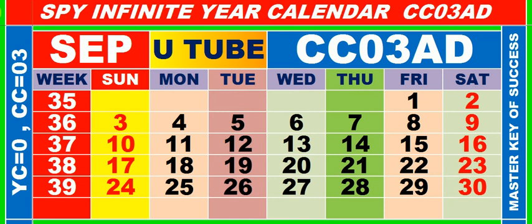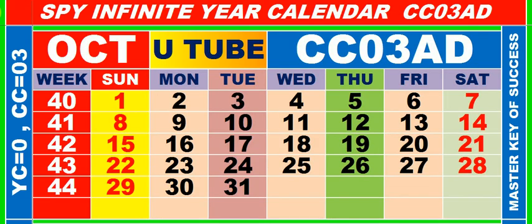Calendar for the month of September, having calendar code equal to 03. Calendar for the month of October, having calendar code equal to 03.